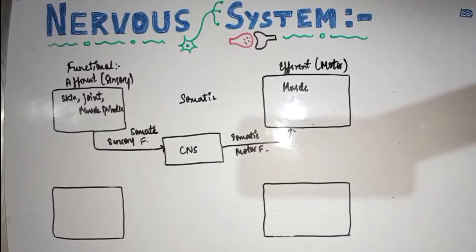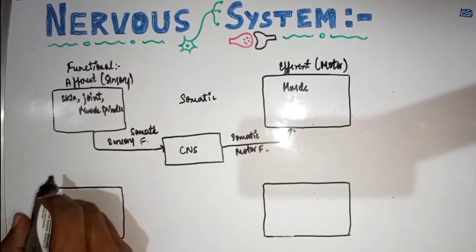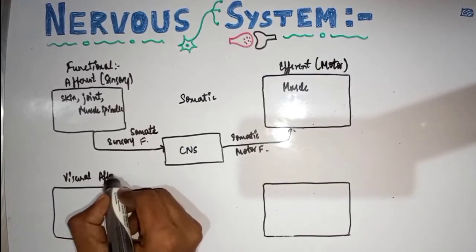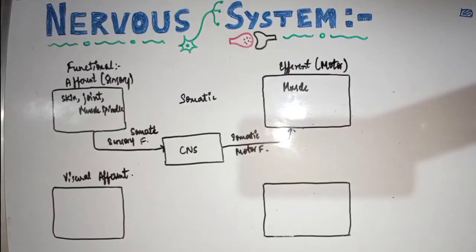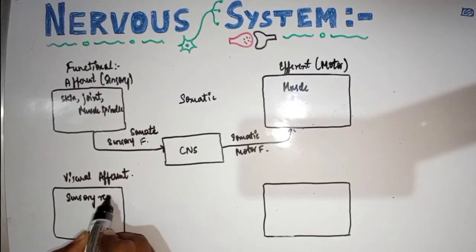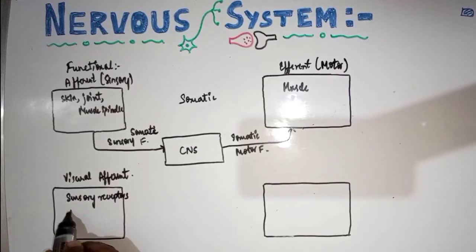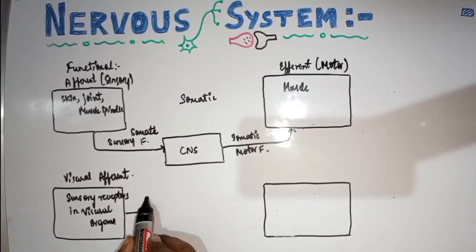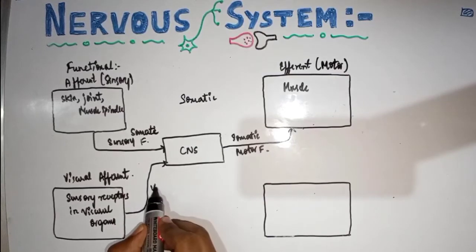The main functional classification is afferent and efferent, and each consists of somatic and visceral types. The somatic type is now covered. For visceral afferent, the sensory receptors present inside visceral organs give sensory stimuli to the CNS.